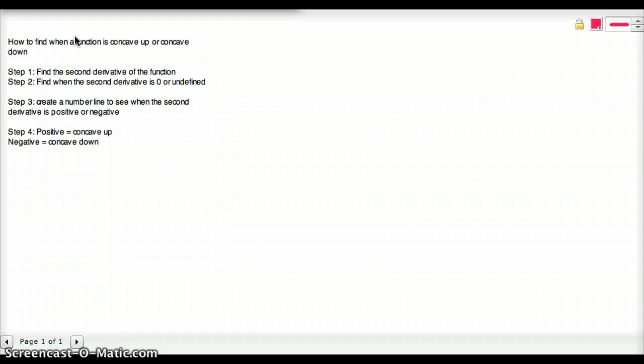Hello, my name is Ben, and in this video we're going to learn how to find when a function is concave up or concave down. To do this, we're going to need to find the second derivative of the function, and we're going to find out when the second derivative is zero or undefined. We're going to create a number line to see when the second derivative is positive or negative, and a positive value will tell us it's concave up and a negative, it's concave down.